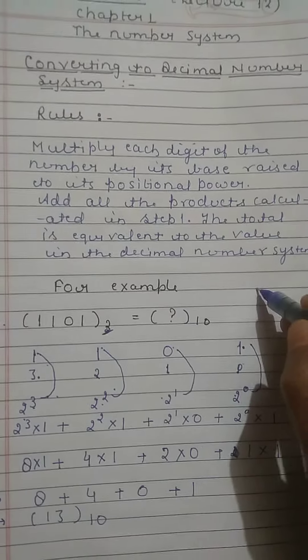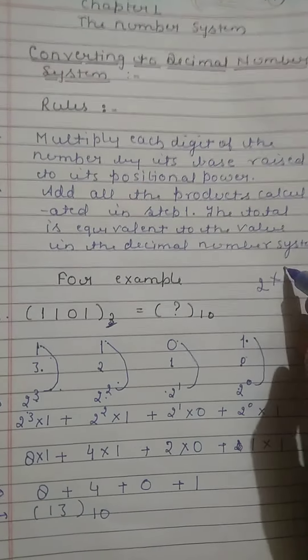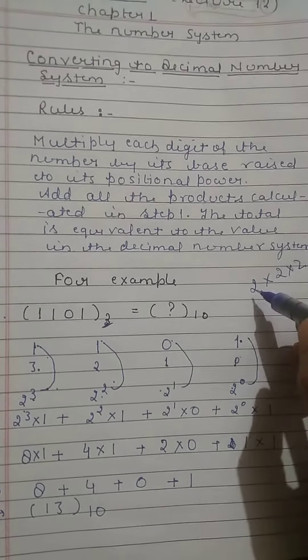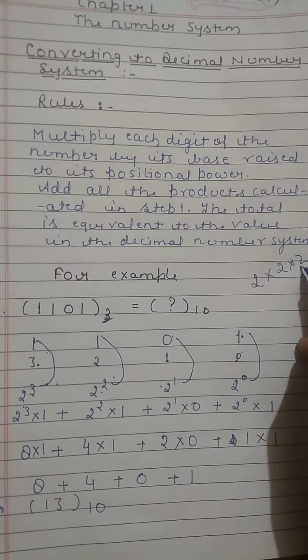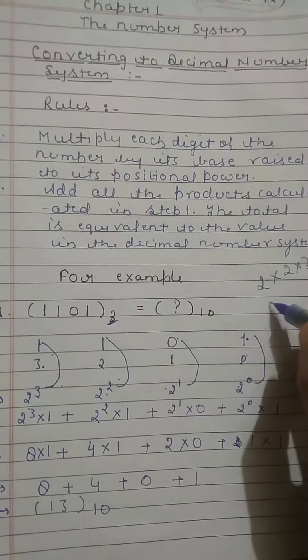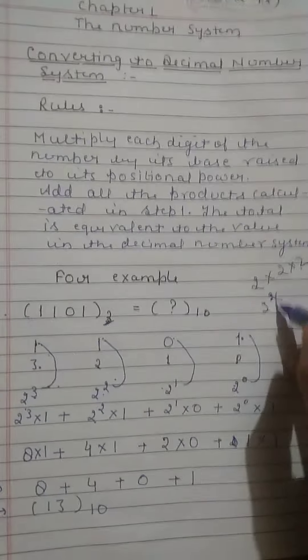2 to the power 3 means we have to multiply 2 three times: 2 times 2 is 4, 4 times 2 is 8. And if we have written 2 to the power 2, it means we have to multiply 2 two times.